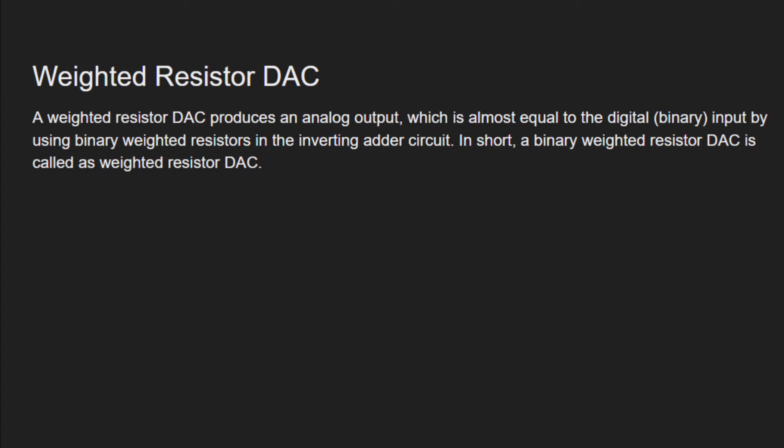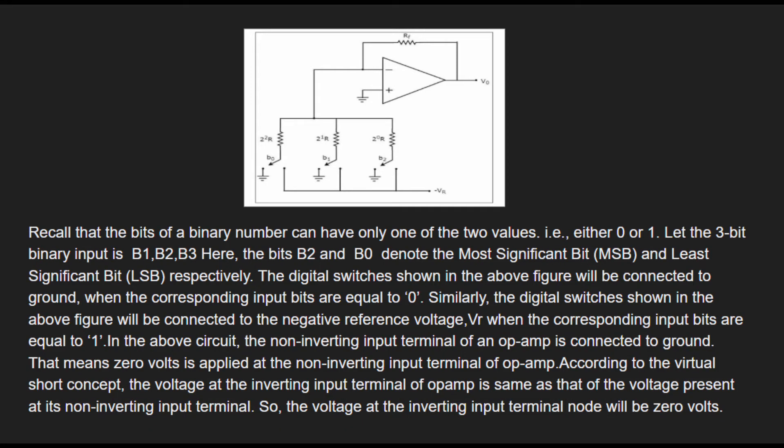A weighted resistor DAC produces an analog output which is almost equal to the digital input by using binary weighted resistors in the inverting adder circuit. In short, a binary weighted resistor DAC is called a weighted resistor DAC. The bits of binary numbers can have only one of two values: zero or one. Let the three-bit binary inputs be b1, b2, b3.